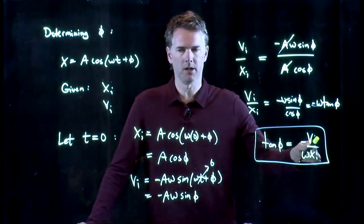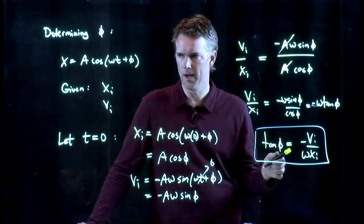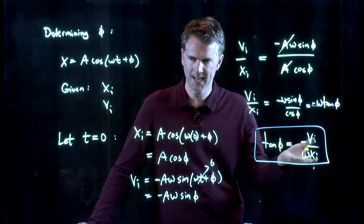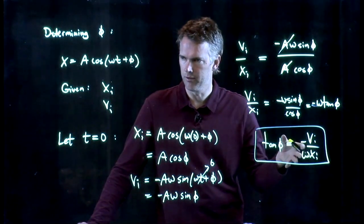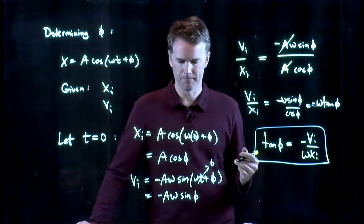So if you're given the starting conditions, vi and xi, you know omega. All you have to do is take the arc tangent of that stuff, and you can determine phi. So let's get started and I'll give you an example of this.